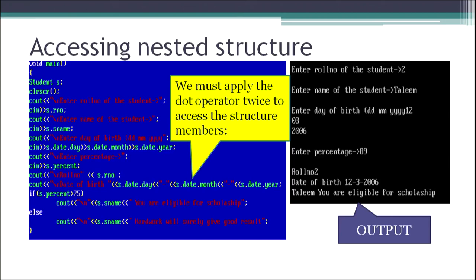When accessing a nested structure, we apply the dot operator twice. For example, to access the month from the date of birth structure, we write s.date.month — first the main structure variable s, then the nested structure variable date, then the member name month. We can also assign structures using the equal-to operator.